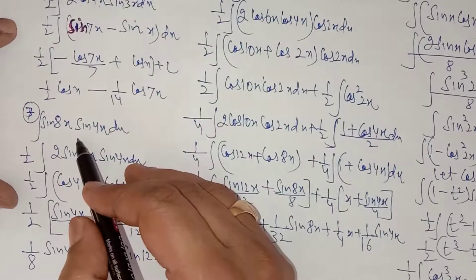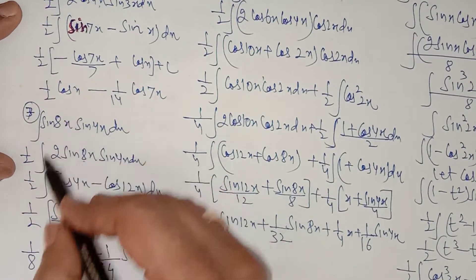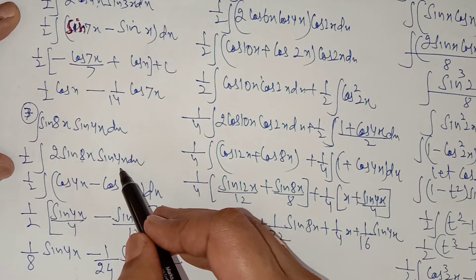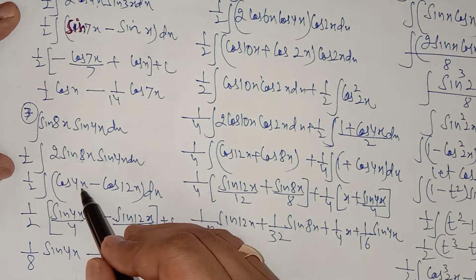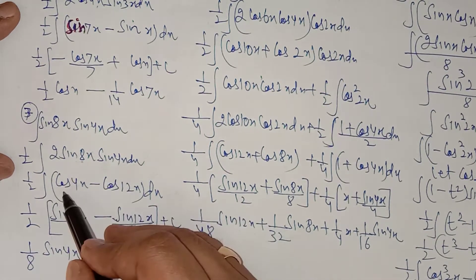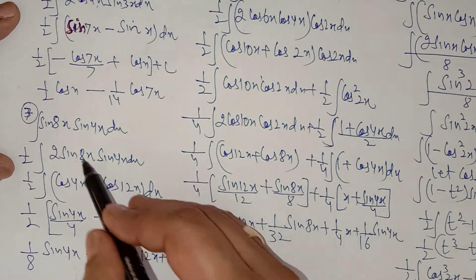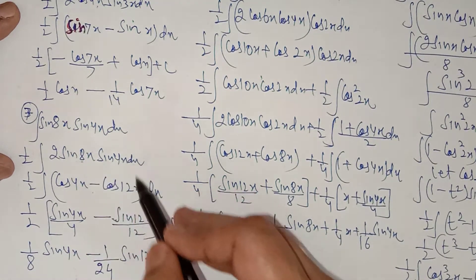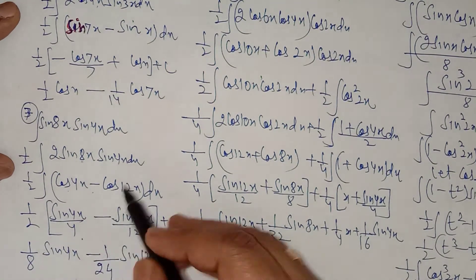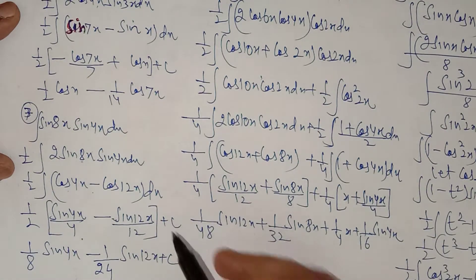Similarly, question number 7: it is sin 8x · sin 4x. Multiply and divide by 2; it becomes 2sinA cosB = cos(A-B) - cos(A+B). So a - b = 4x and a + b = 12x. The integral of cos 4x is sin 4x / 4, and the integral of cos 12x is sin 12x / 12, plus C.